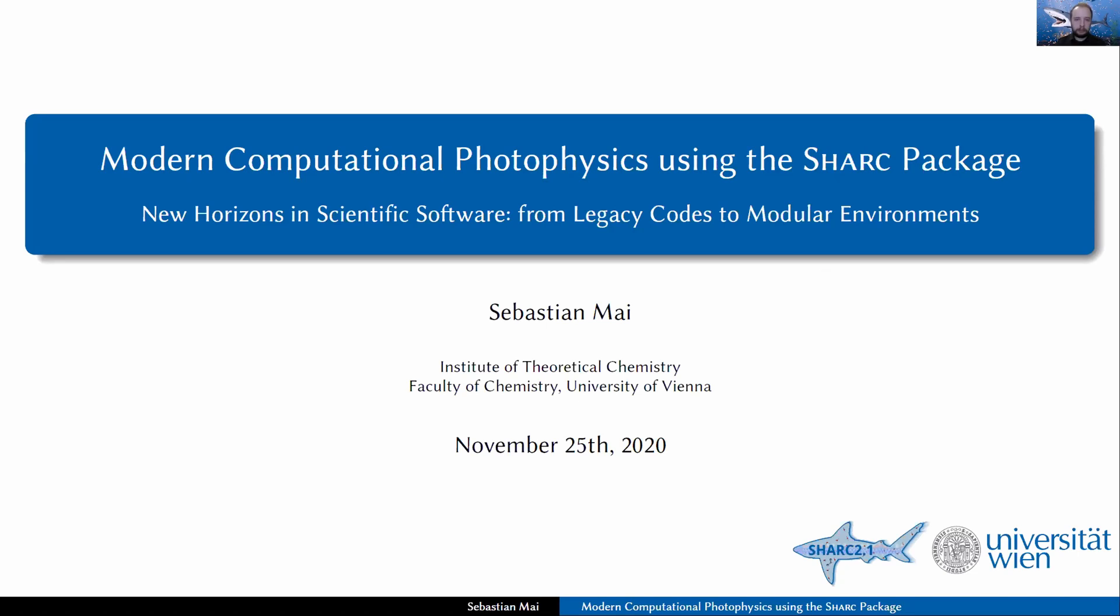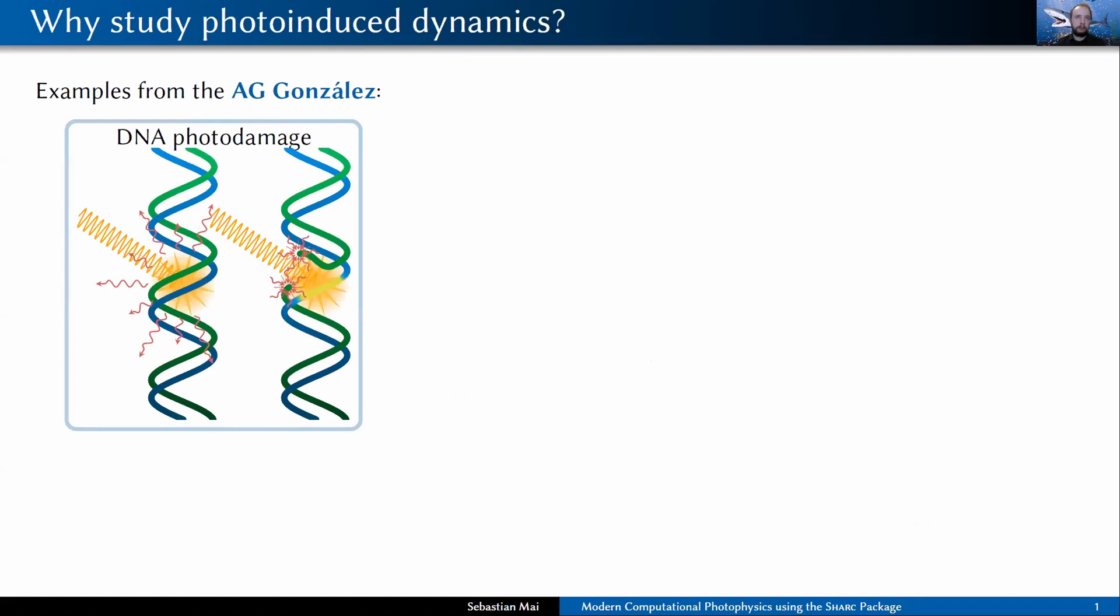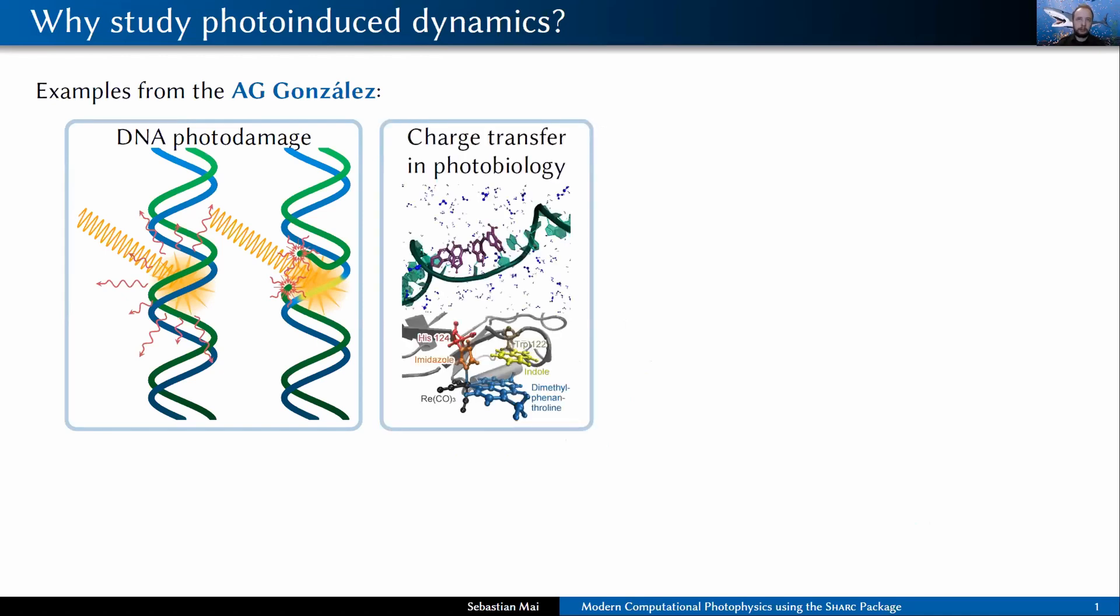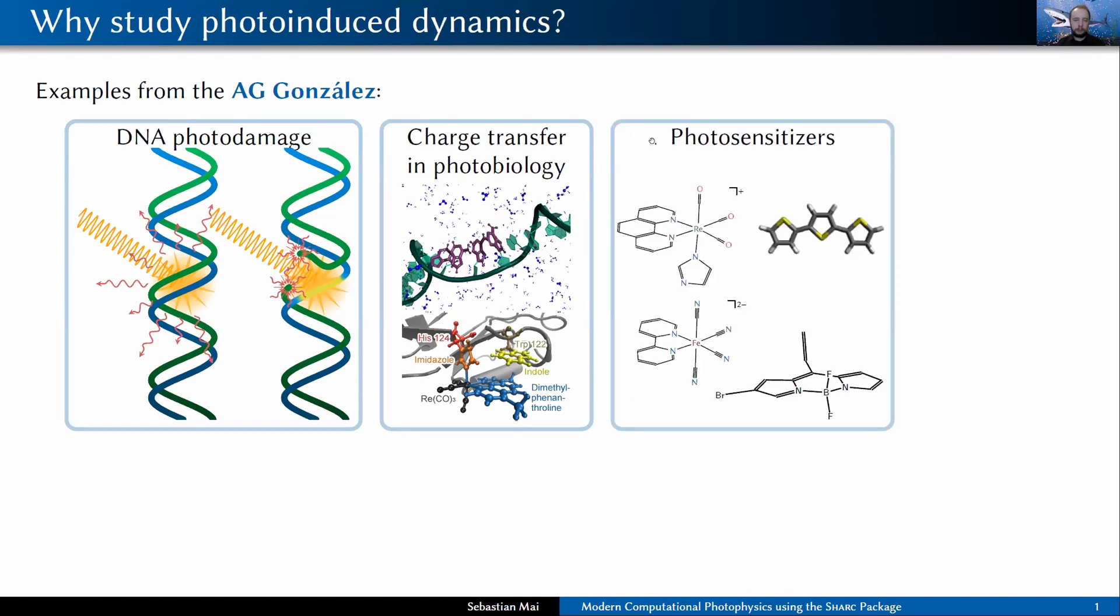As it is a non-adiabatic dynamics code, it can be primarily used to study photo-induced dynamics. For example, some cases that we study in this group was DNA photo damage or charge transfer in photobiology in different systems like DNA or proteins, in photosensitizers of different kinds like organic or transition metal complex photosensitizers used for different purposes, in molecular switches, or small molecules that are important in atmospheric chemistry.